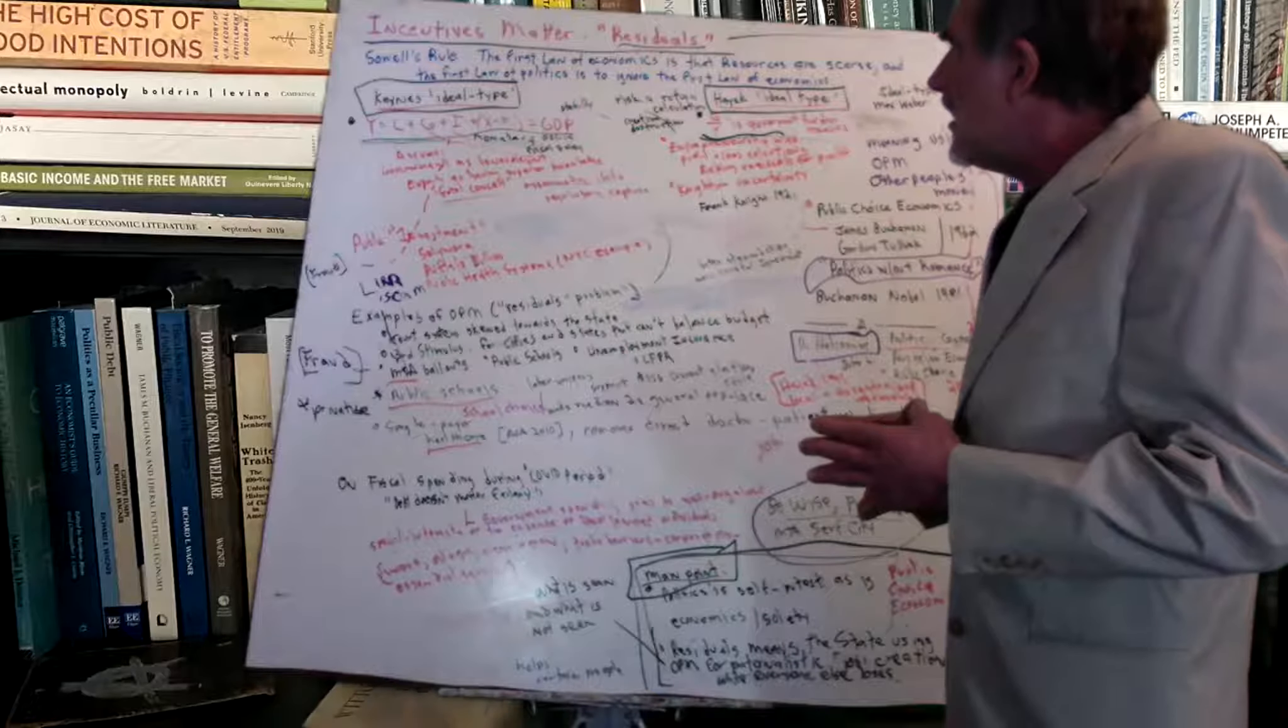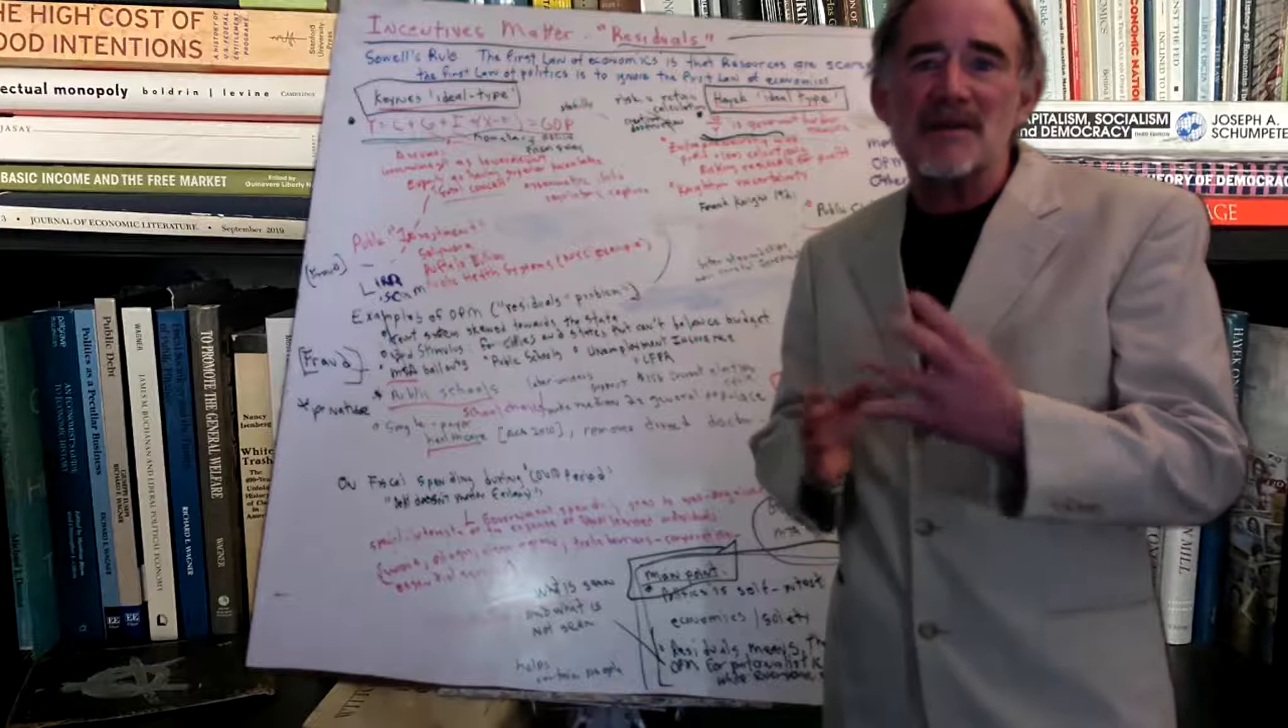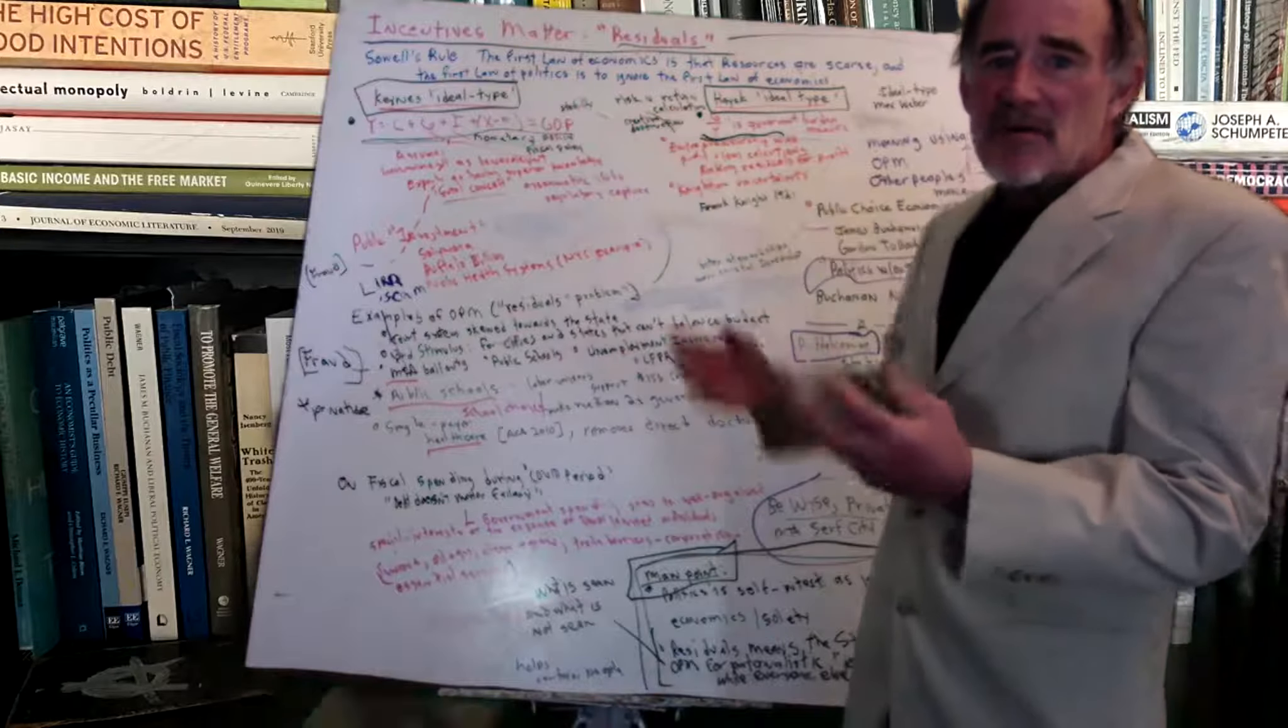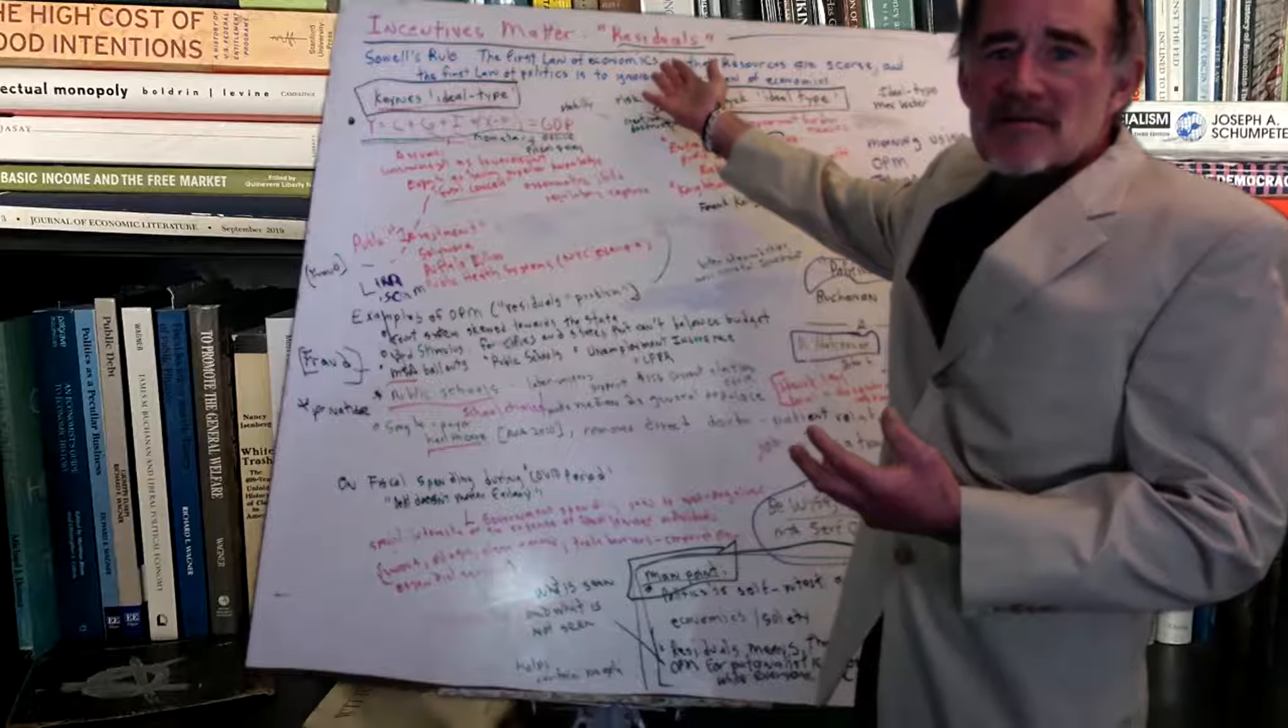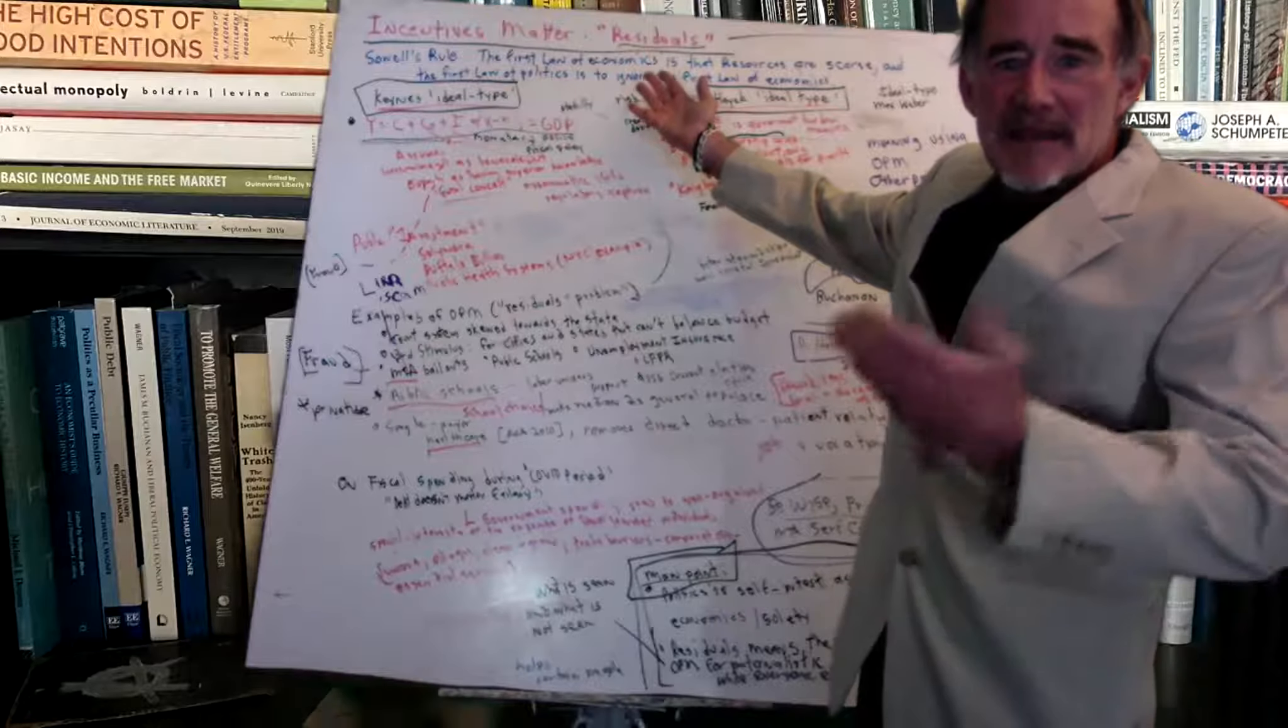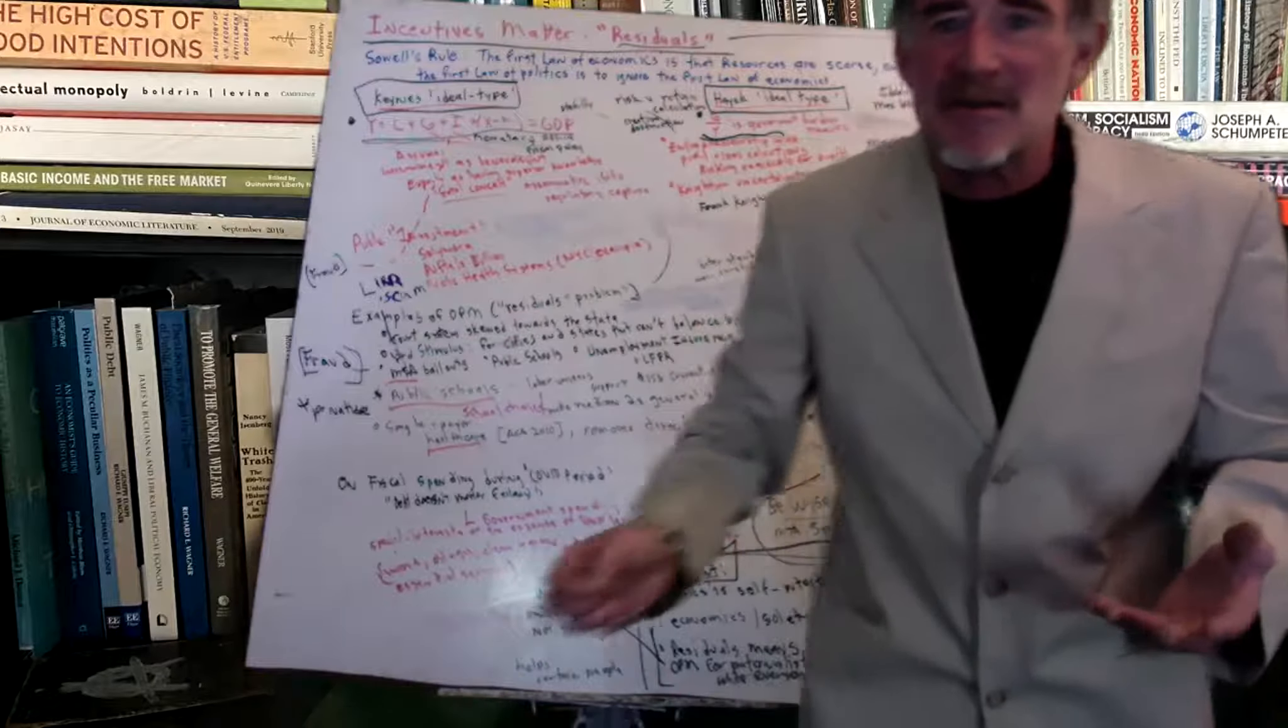So in voluntary exchange, people are in general exchanging things that they have property rights over. They have risk return calculations. They're looking out for their own best interest in exchange with others because they own the residuals to those transactions, to that property, to those rights.